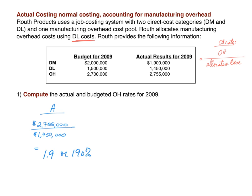Now let's calculate the budgeted rate. It's the same formula — overhead divided by allocation base — but this time using estimated or budgeted numbers. Our budgeted overhead is $2,700,000 divided by the budgeted direct labor cost of $1,500,000. Since it's still dollars divided by dollars, the budgeted rate is 1.8, or 180%.